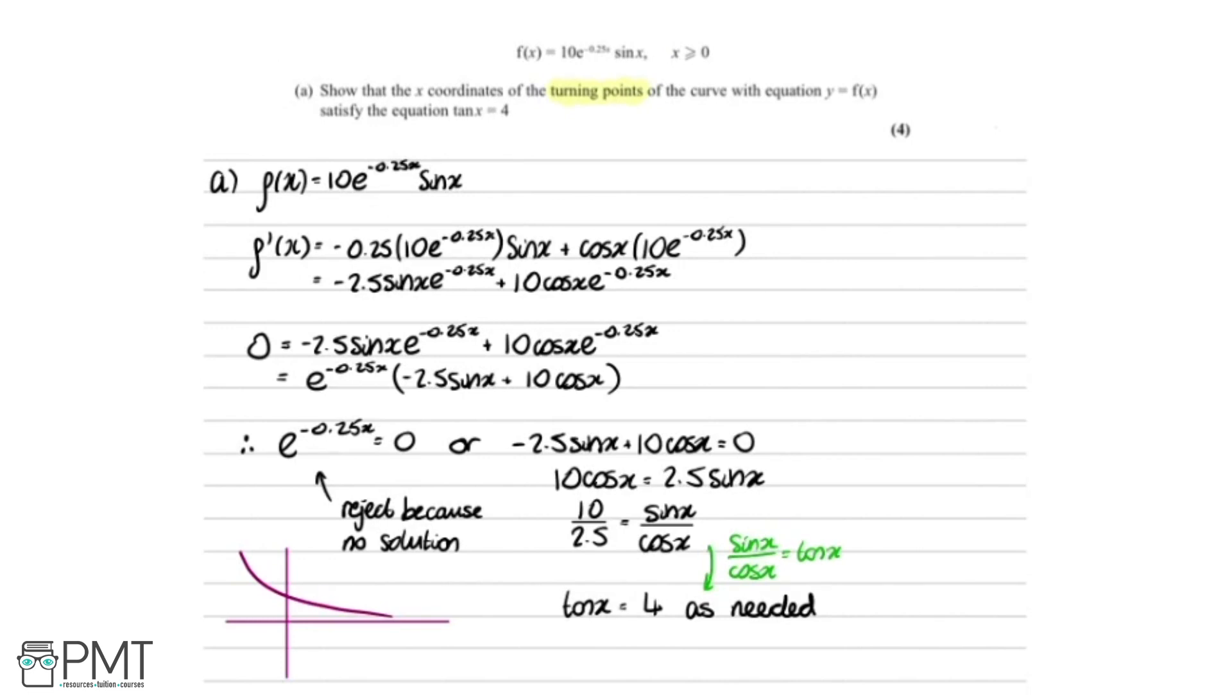Looking to see where we get the marks, we'll actually get two marks here for successfully differentiating using the product rule. We get another mark down here for both factorizing out the e^(-0.25x), and then realizing that it doesn't have any solutions, so we need to reject it. And then we get the final mark here for this working here, which leads down to tan x equals 4.